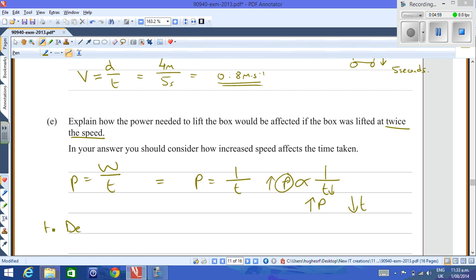To decrease the time taken to do the work, which is by working faster, which is an increase in speed, you need to increase the power. You must increase the power, so you must use more power to get the job done faster, essentially.